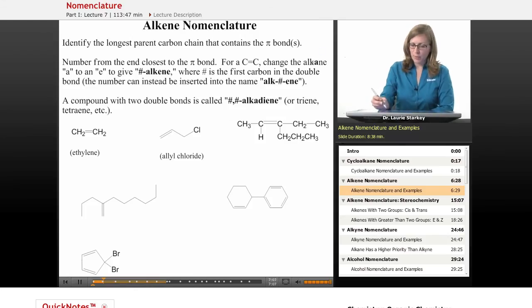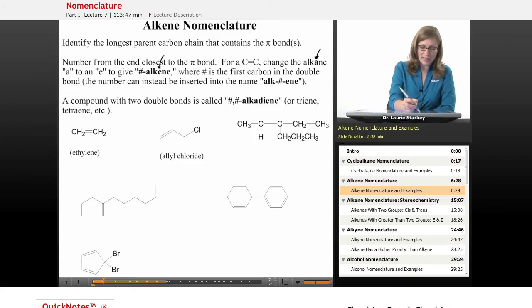After doing that, what we're going to do is we're going to take the A in the word alkane—methane, ethane, propane, butane—and we're going to change it to an E. And so we're going to call it an alkene instead.